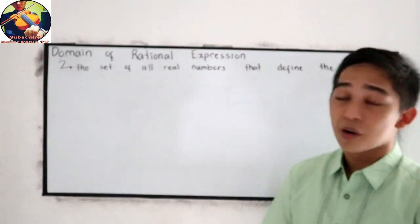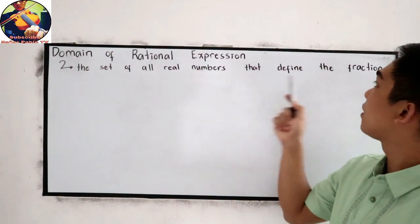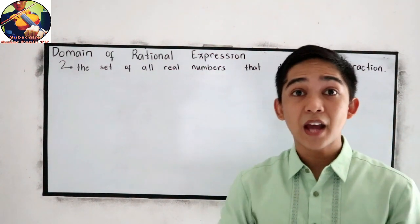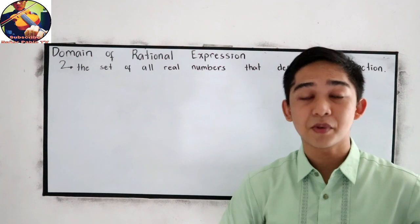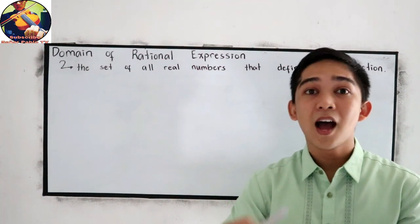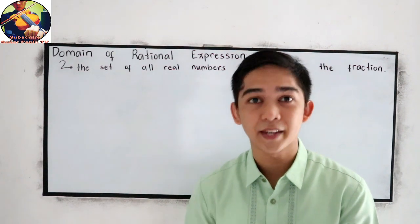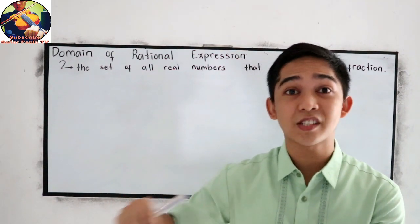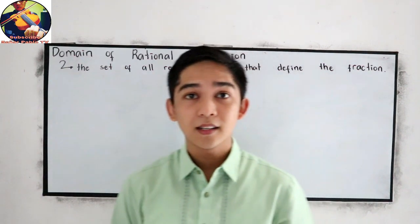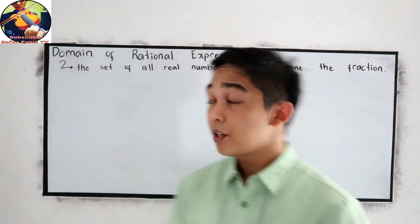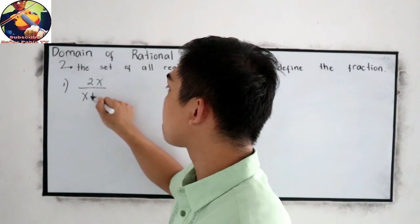Let us define what the domain of a rational expression is. It is the set of all real numbers that define the fraction. In our rational expression, there are numbers that do not satisfy our conditions — those will make the expression undefined. We are going to find those restricted values for our rational expressions.